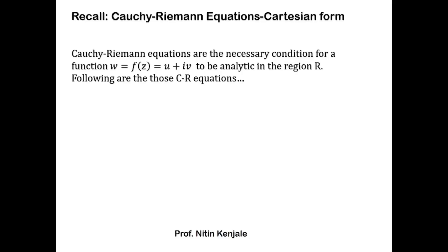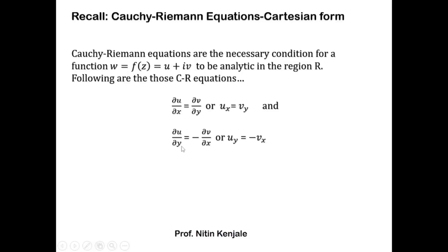The Cauchy-Riemann equations are the necessary condition for a function f(z) = u + iv to be analytic in the region R. Those equations are: ∂u/∂x = ∂v/∂y (that is, u_x = v_y), and ∂u/∂y = -∂v/∂x (that is, u_y = -v_x), where u is the real part and v is the imaginary part of the analytic function f.